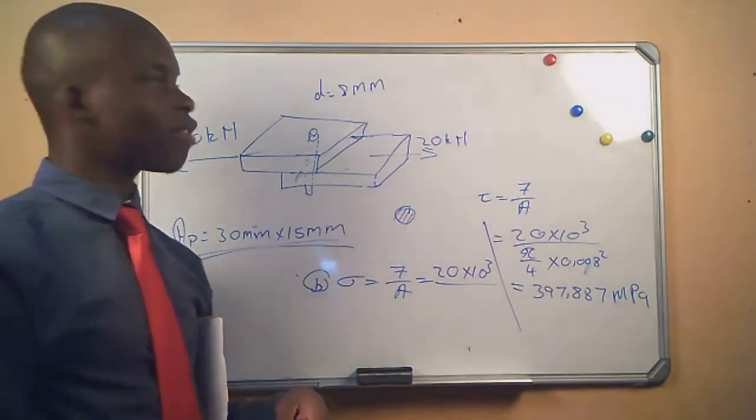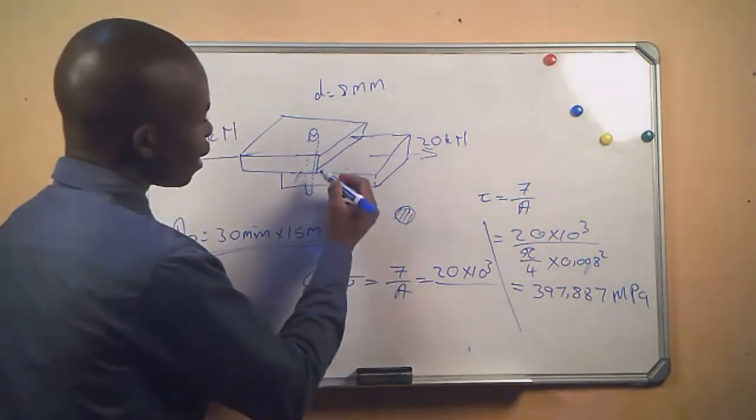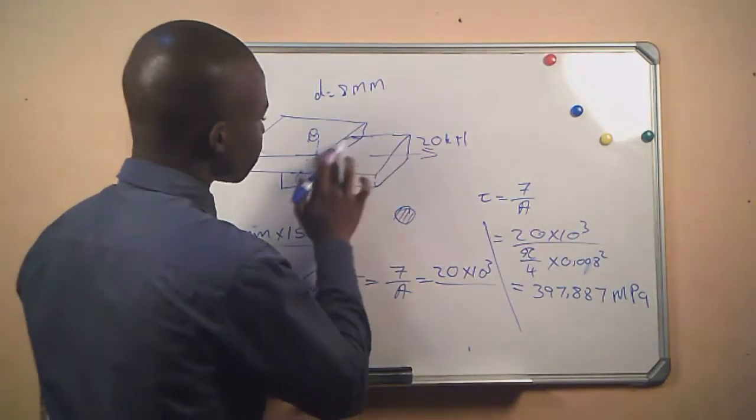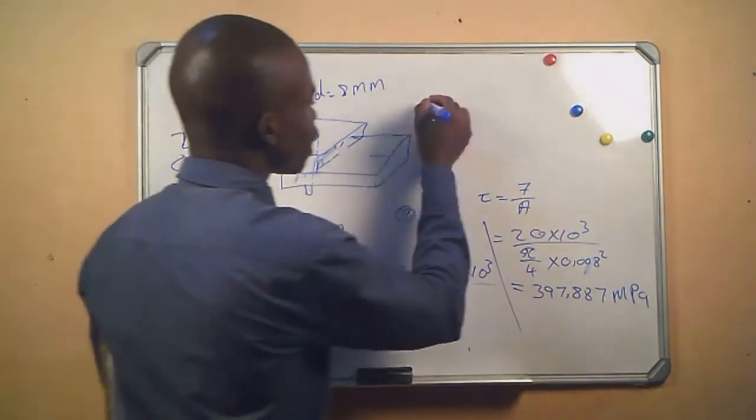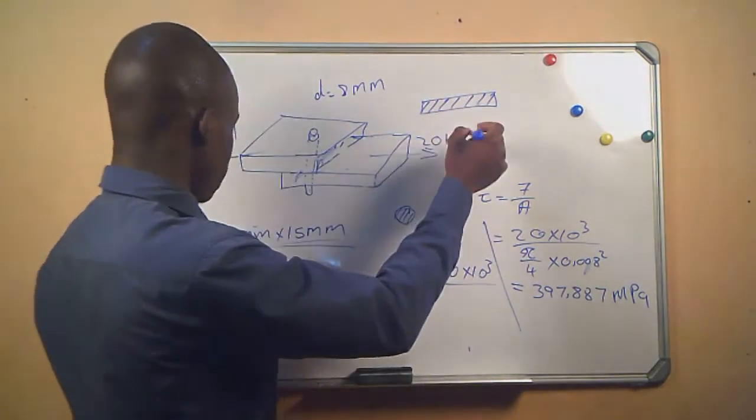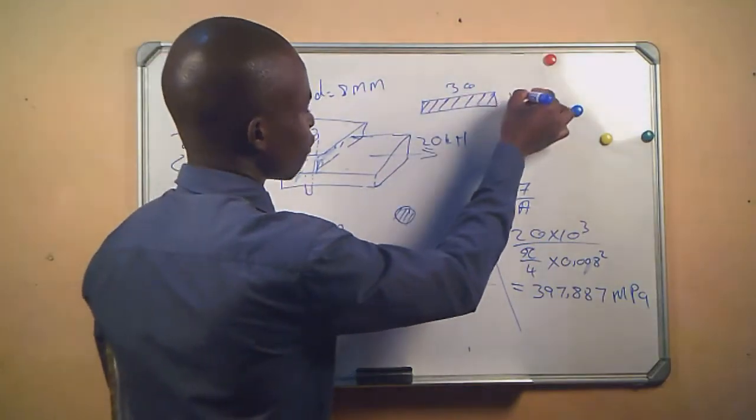We have to use the area of the plates because we know that the area that we are dealing with is this. It will be something like this. And we are given this as 30 by 15.